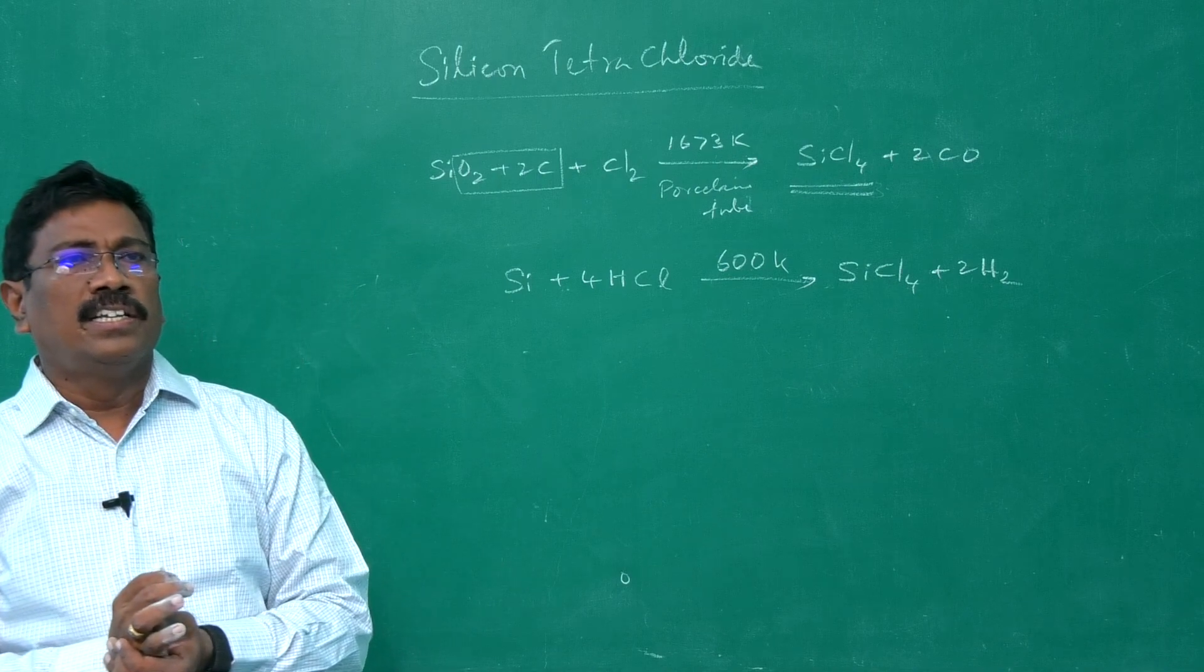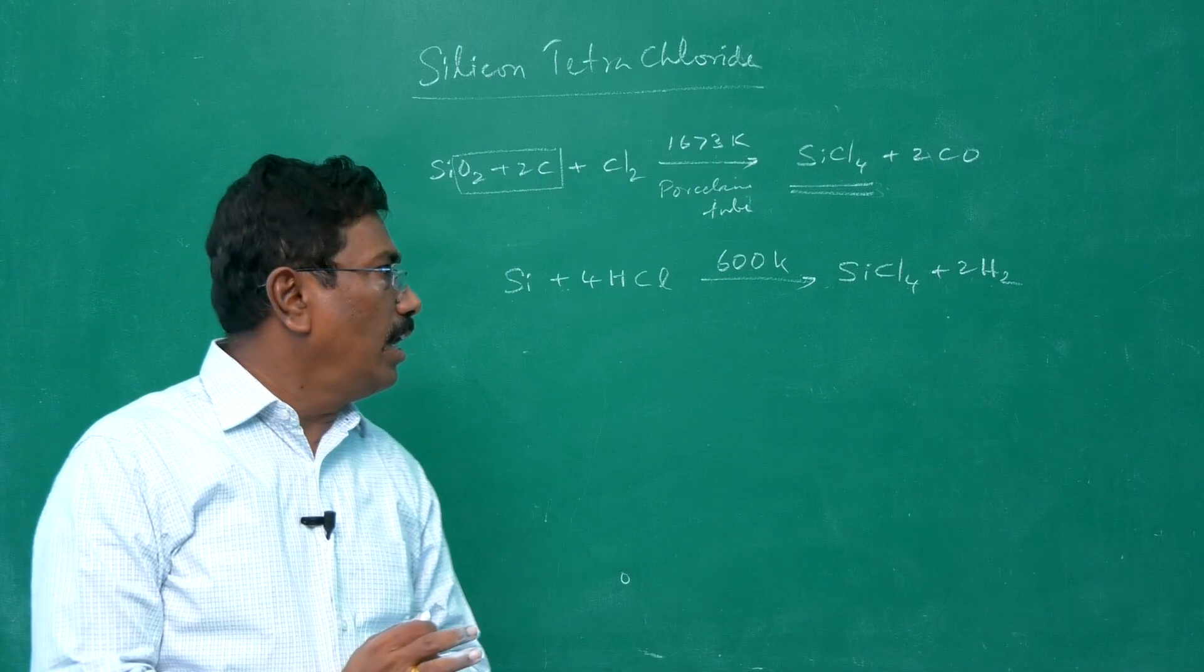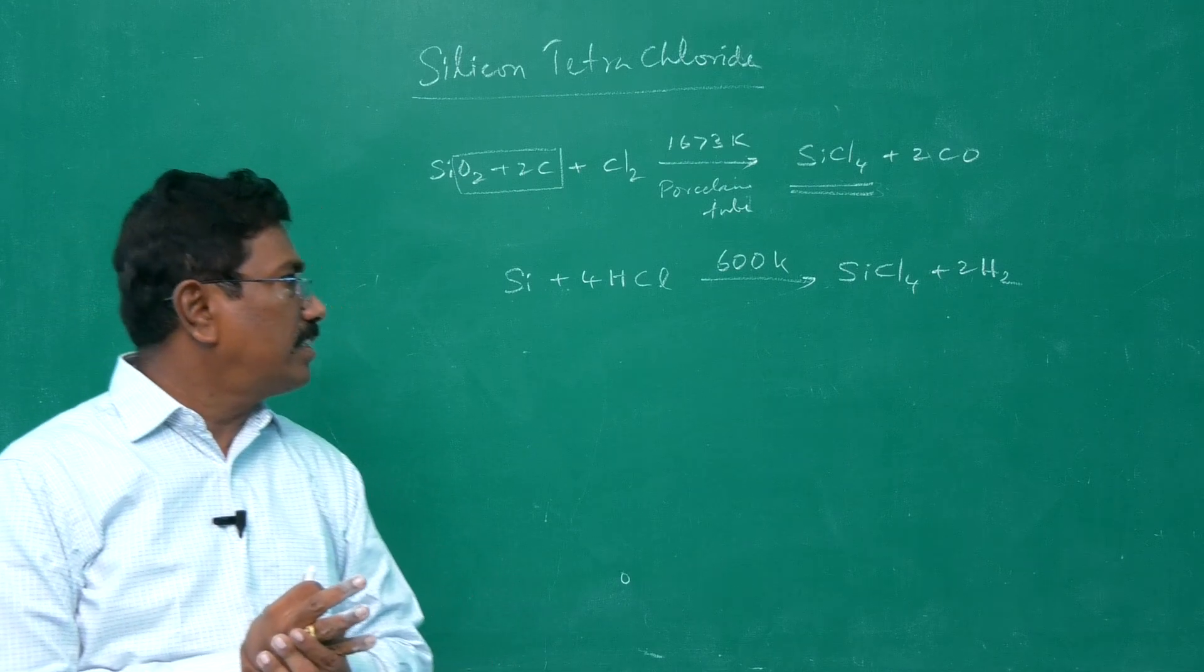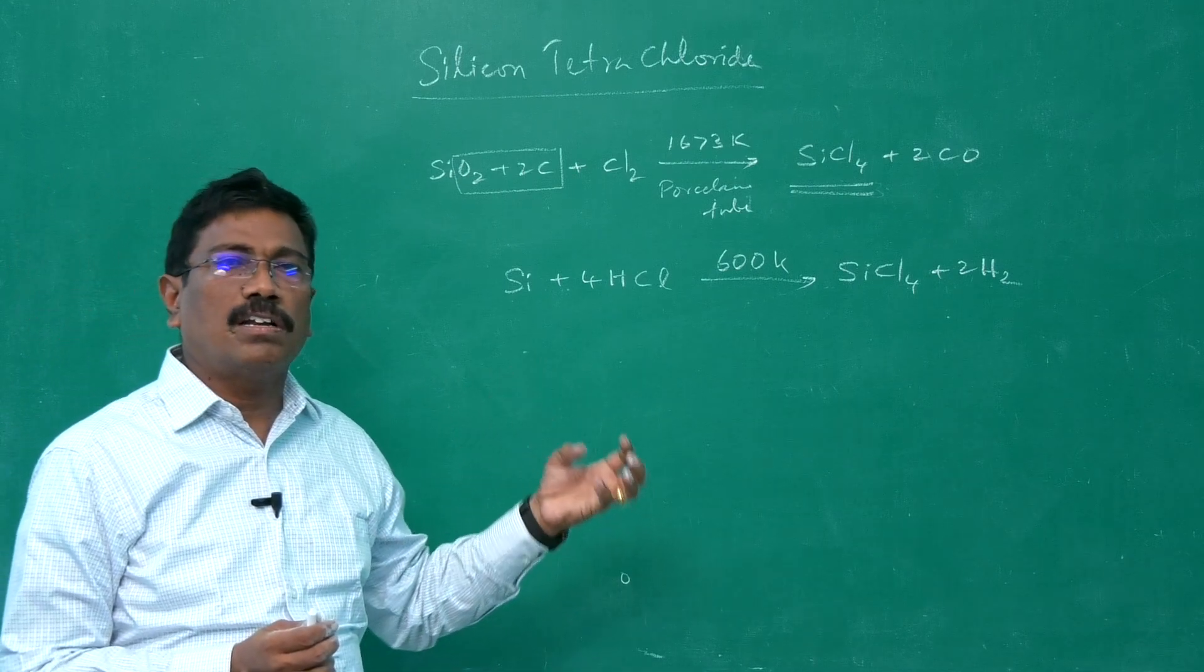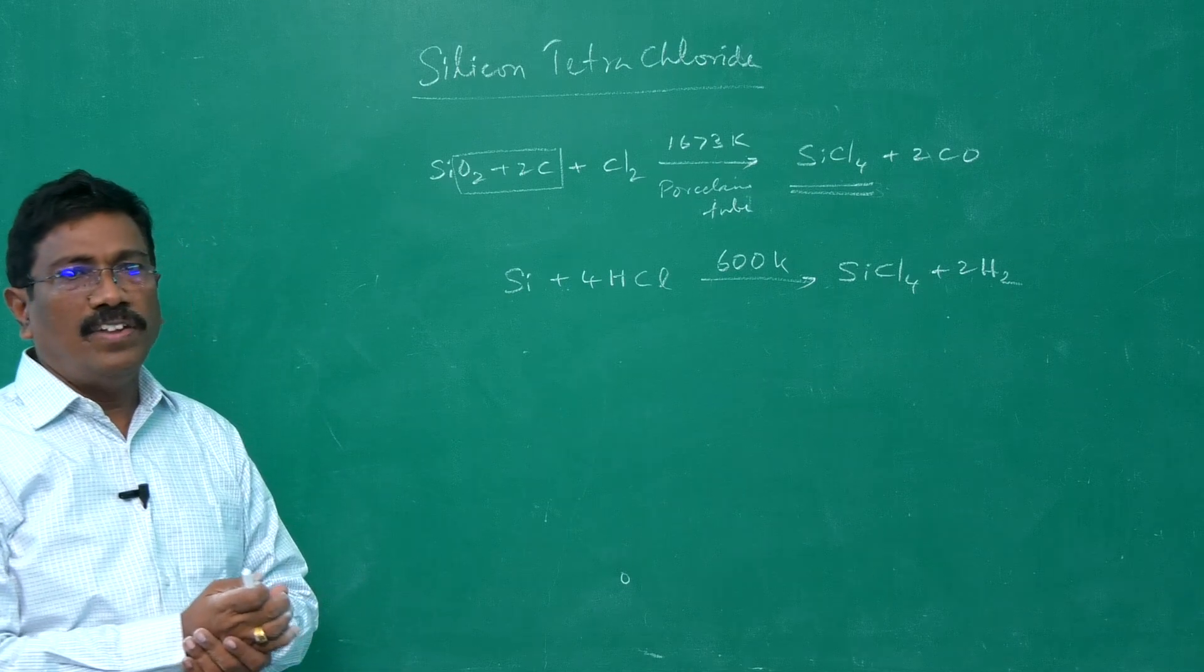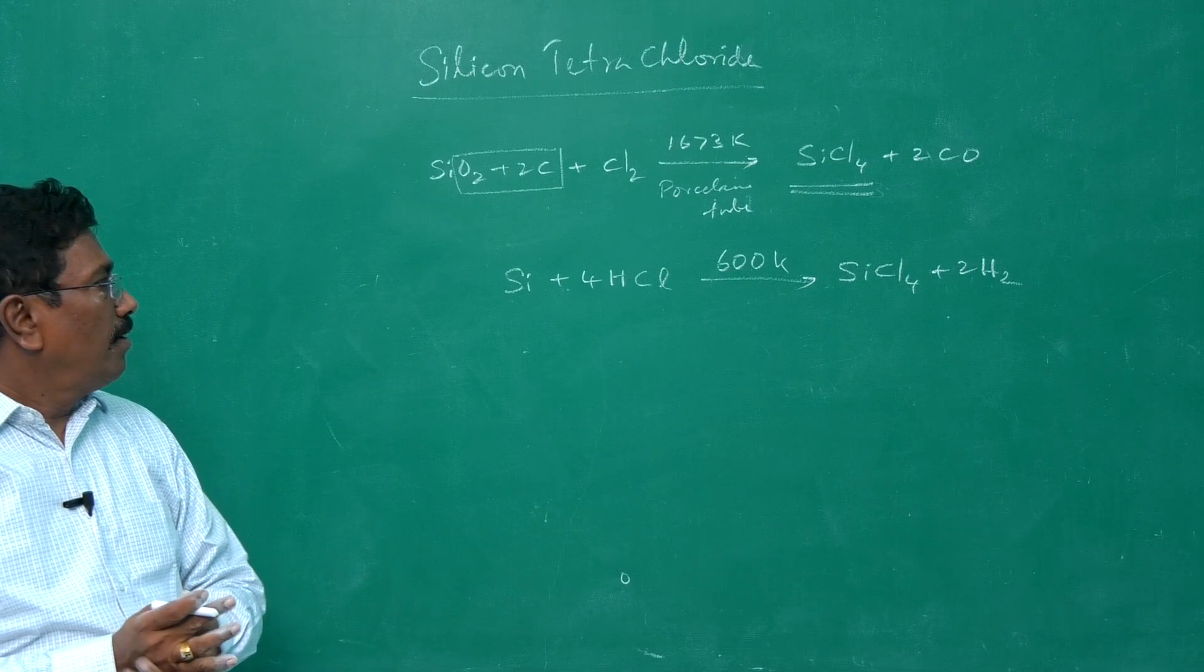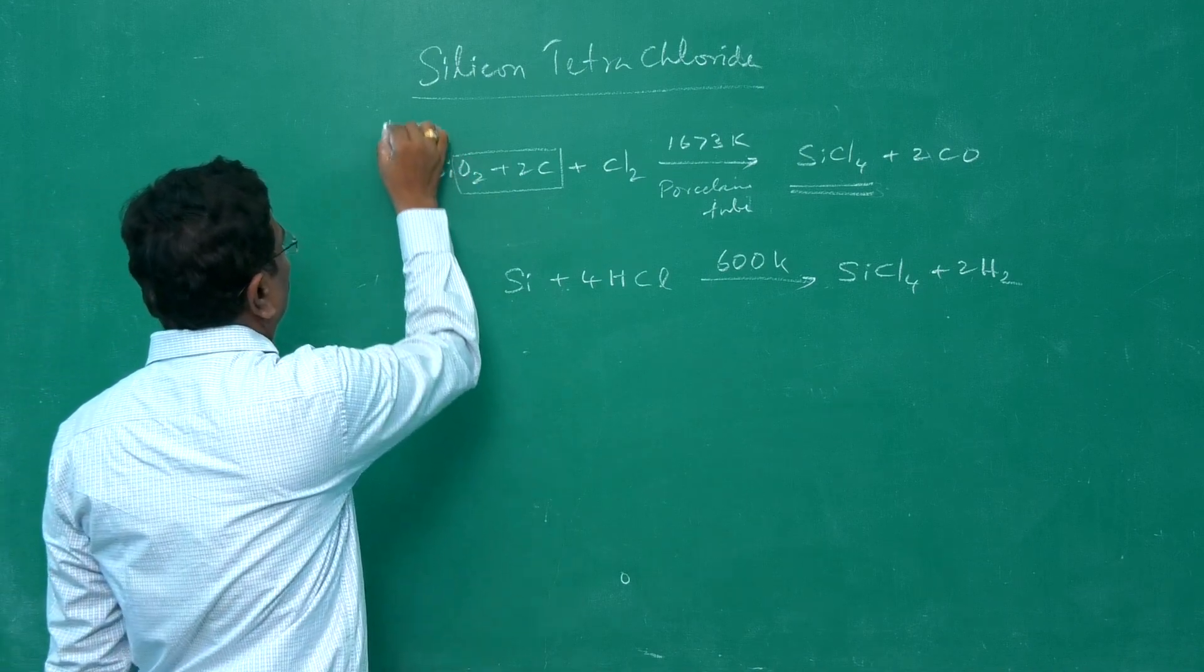These are the methods of preparation of silicon tetrachloride. It is a colorless fuming liquid. It fumes in moisture or moist air because it undergoes hydrolysis, and freezes at very low temperature: minus 70 degrees Celsius.